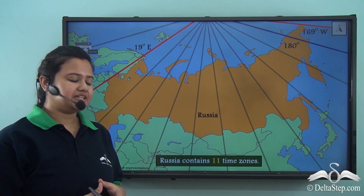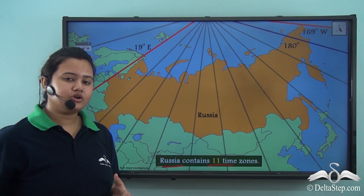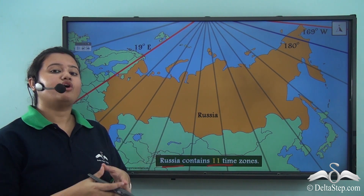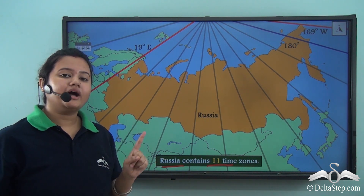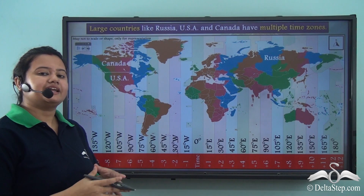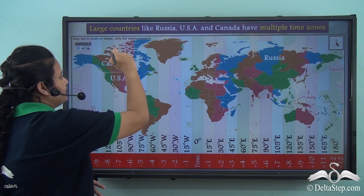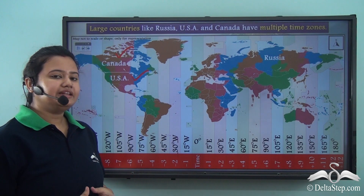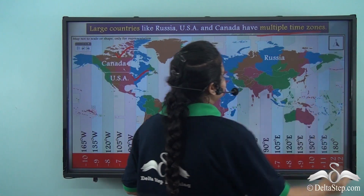As calculated, Russia contains approximately 11 time zones, because the longitudinal extent of this country is too large to have just one time zone. Just like Russia, other large countries of the world like Canada and USA also have multiple time zones.